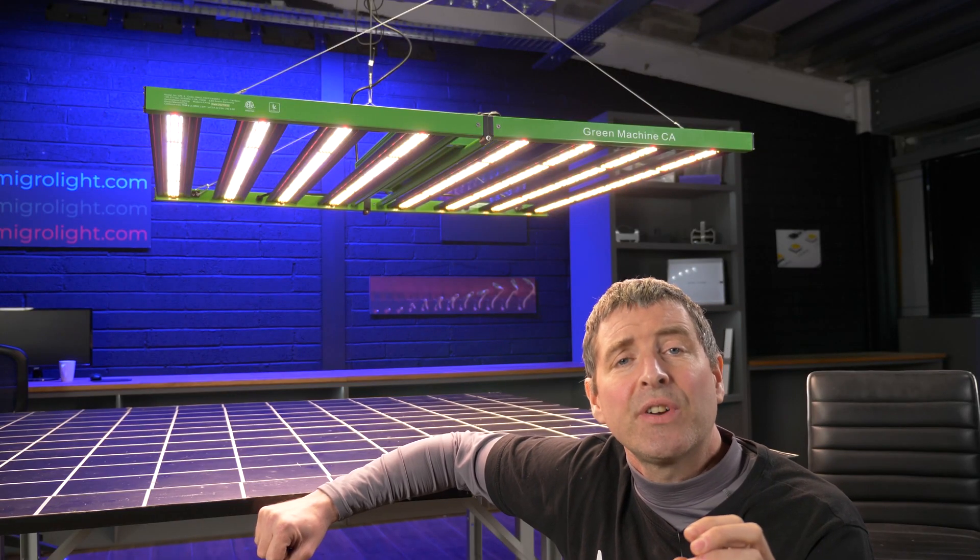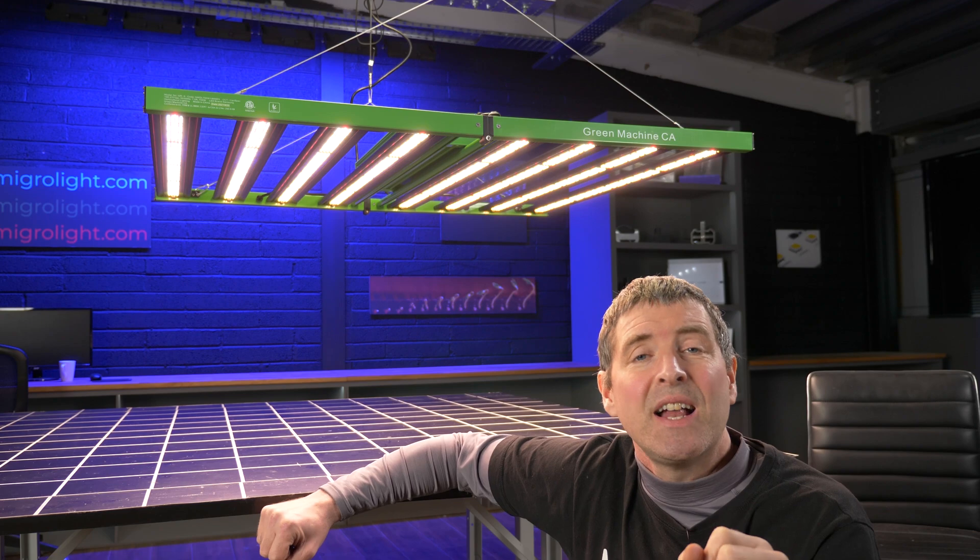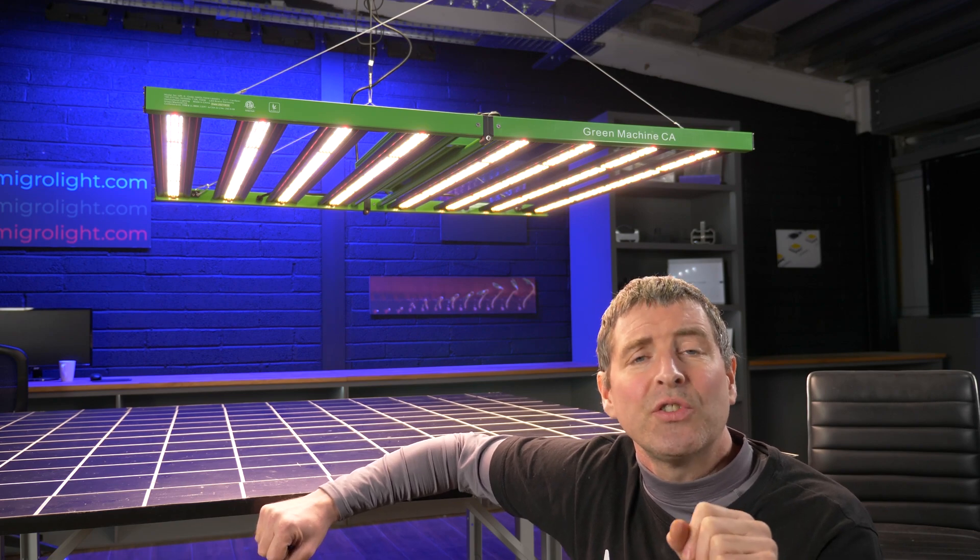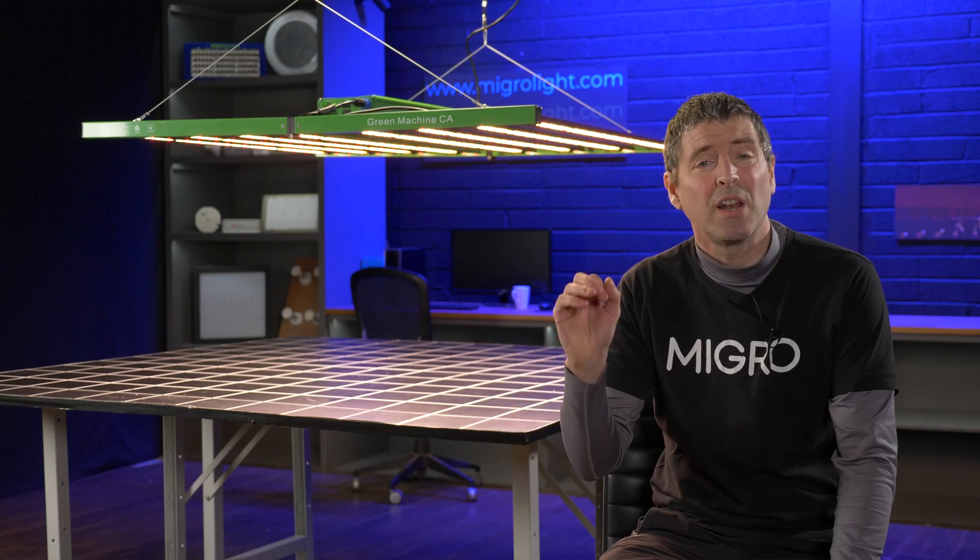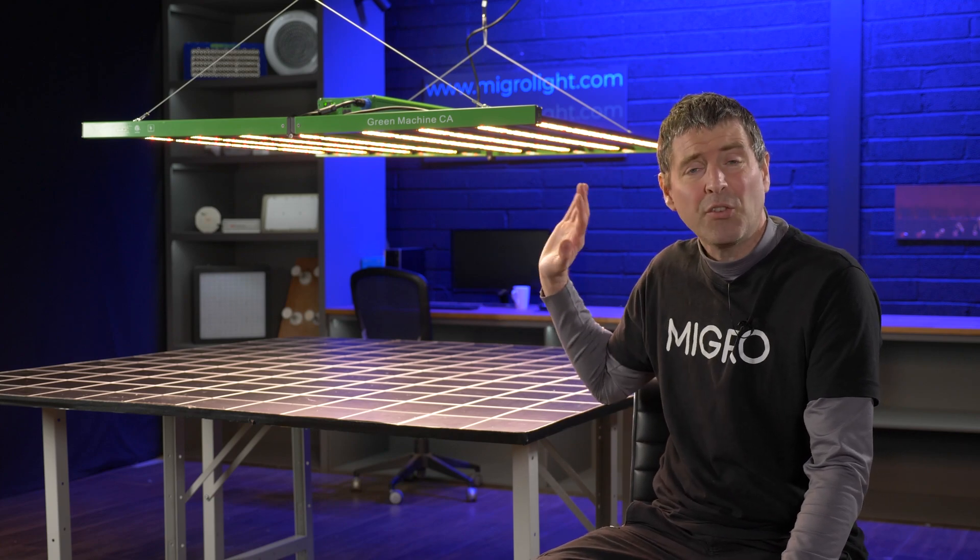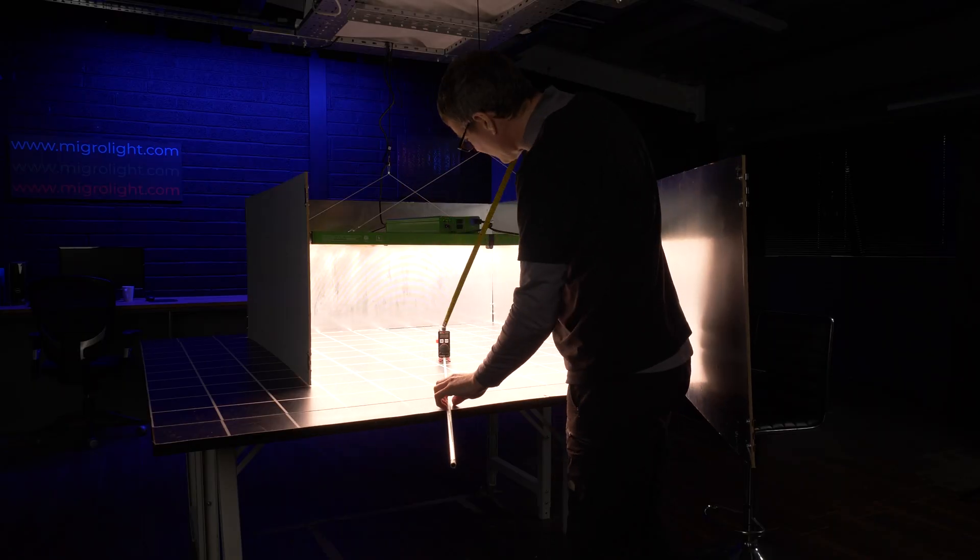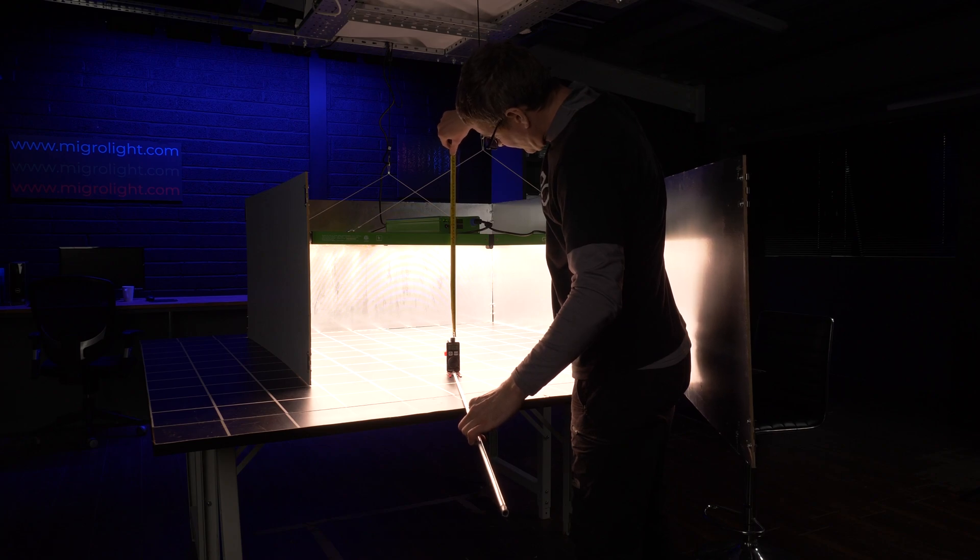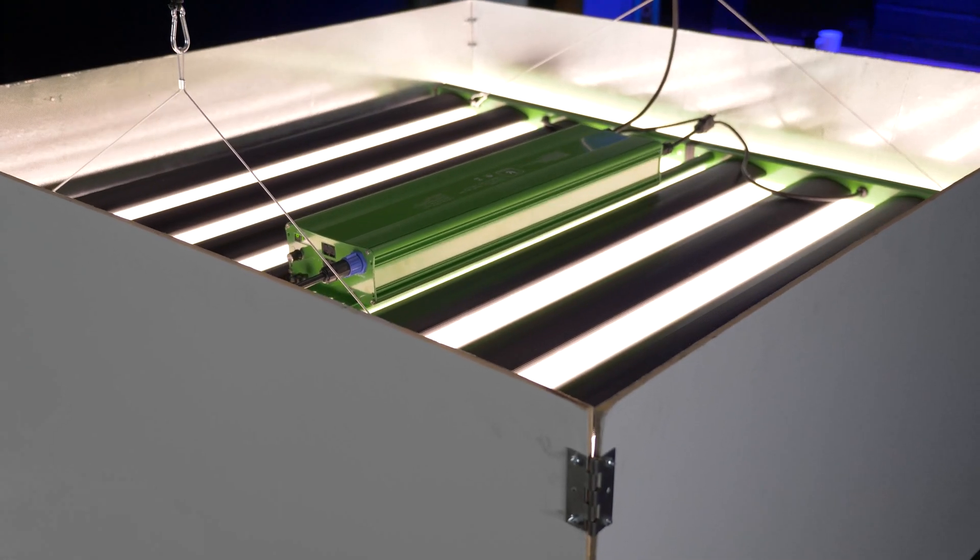And then you have this far red, additional far red element, which you can boost for the flowering stage. This is a large light physically, four foot by four foot or 1.2 by 1.2 meters in size and 650 watts plus your 80 watts far red output.